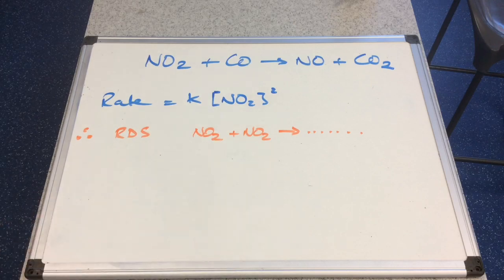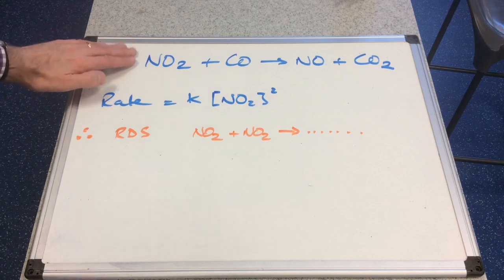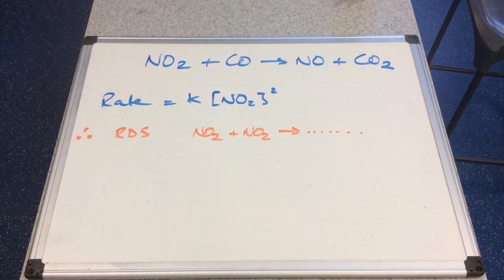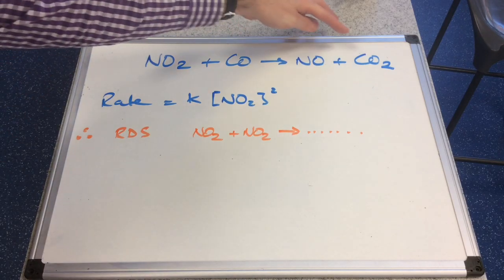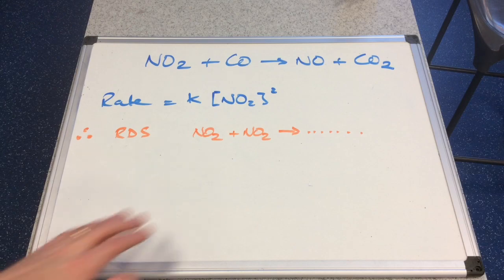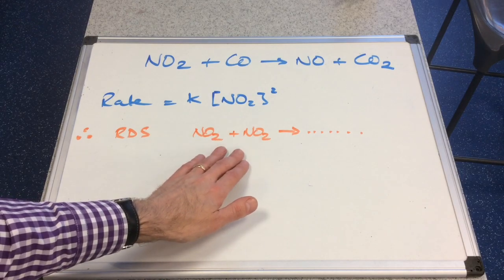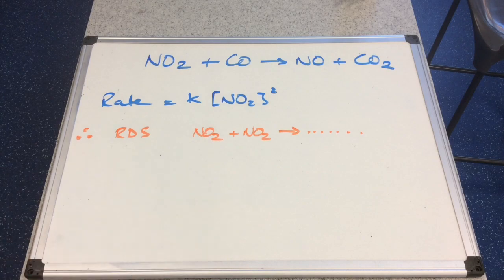We don't know what the products of the rate determining step are, but we know the overall equation. We should appreciate that there must be another step, because CO and CO₂ feature in the overall equation but not in the rate determining step — there's no carbon in the RDS at all. So we must have another step that contains carbon.